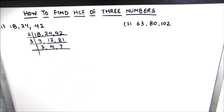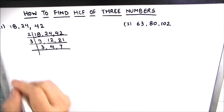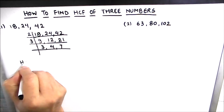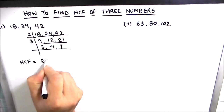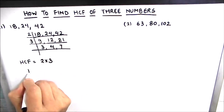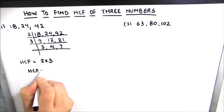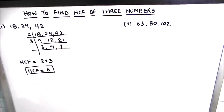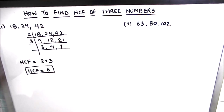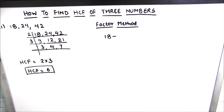Now we have 3, 4, and 7, and there is no common factor of all three. So we stop here. The HCF is the product of the numbers on the left-hand side: 2 times 3, so the HCF of 18, 24, and 42 is 6. Now let's find the HCF using the factor method.